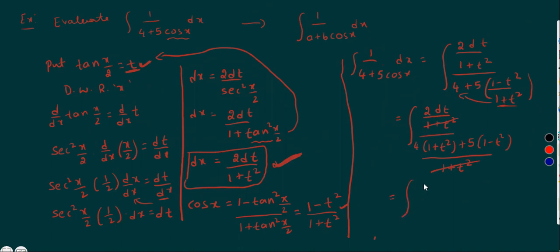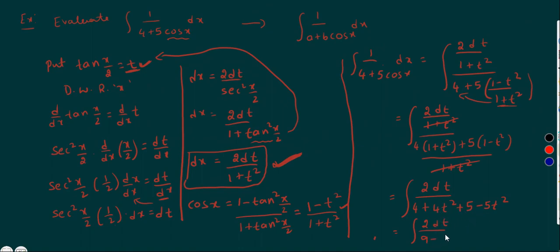Remaining: 2dt by, multiplying out — 4 into (1 plus t square) gives 4 plus 4t square; multiplying by 5 gives 5 minus 5t square. So integration 2dt by (4 plus 5 plus 4t square minus 5t square) = 2dt by (9 minus t square).